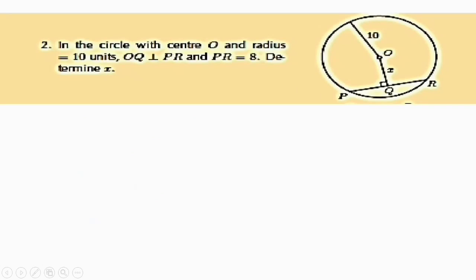Question two: in the circle with center O and radius 10 units, OQ is perpendicular to PR and PR equals 8 units. Determine x. Unlike question one, there is no right-angle triangle drawn, so we must construct one by joining the line to form radius OP, and also the other side to form radius OR. Now we have a right-angle triangle.